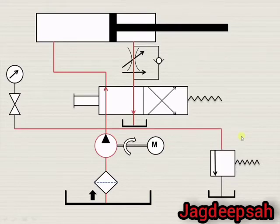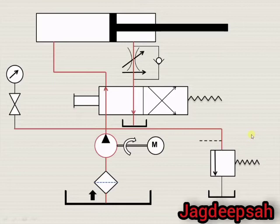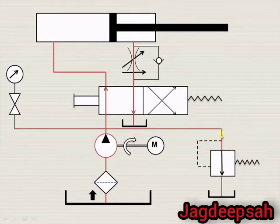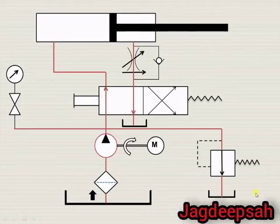Now let us understand how the pressure relief valve works. The fluid pressure is sensed through this particular line. If the pressure is more than the design pressure, this valve will open as shown by the arrow, and the excess liquid will go back to the reservoir so that the system pressure can be restored back to its original design value.